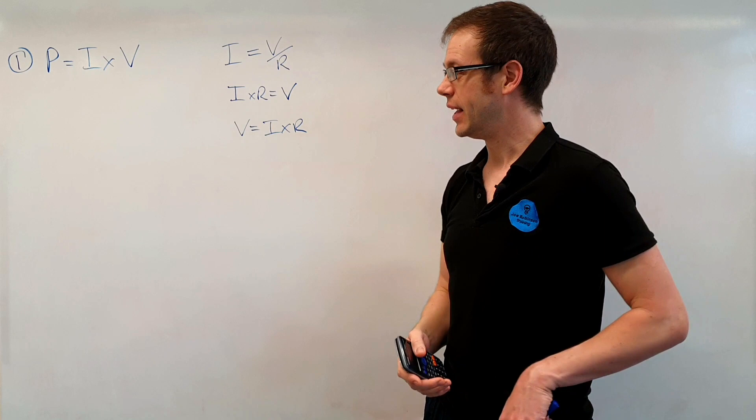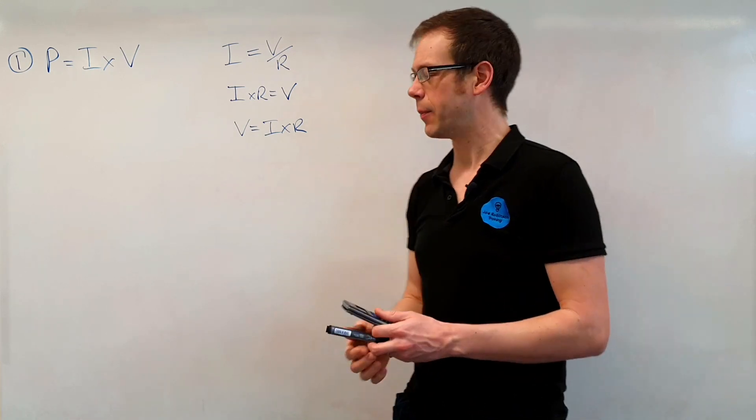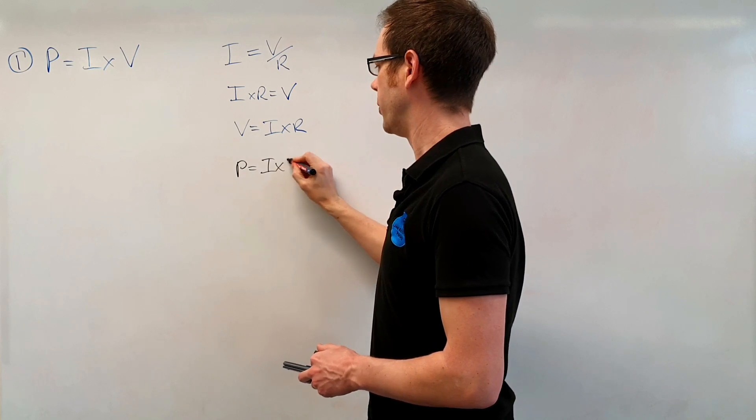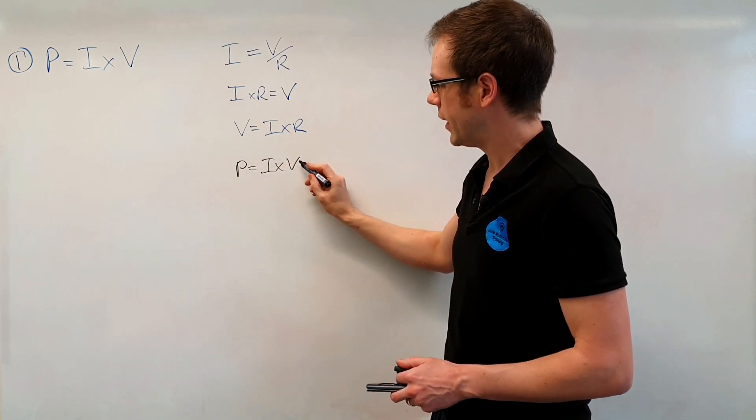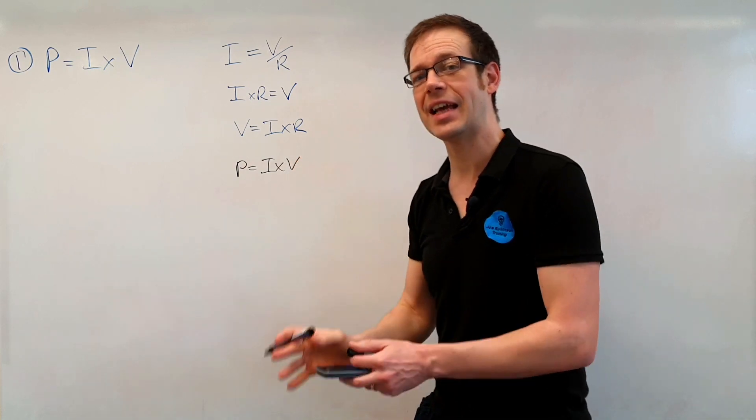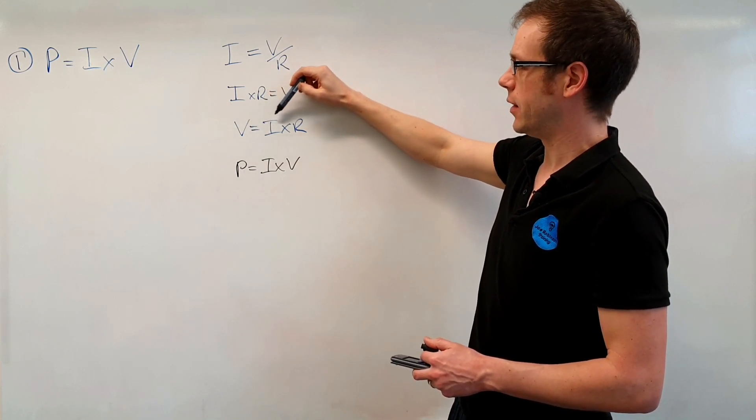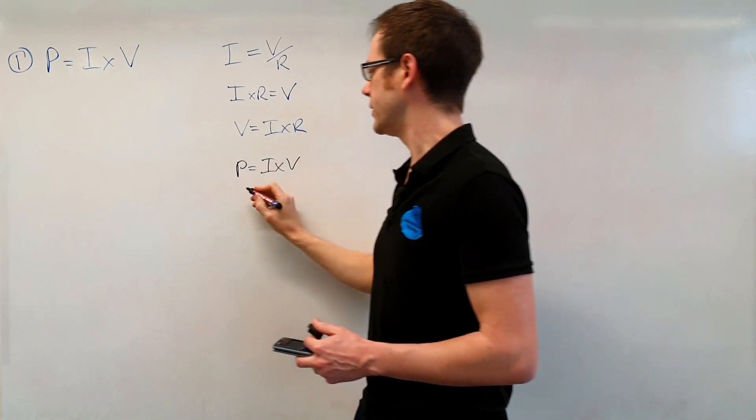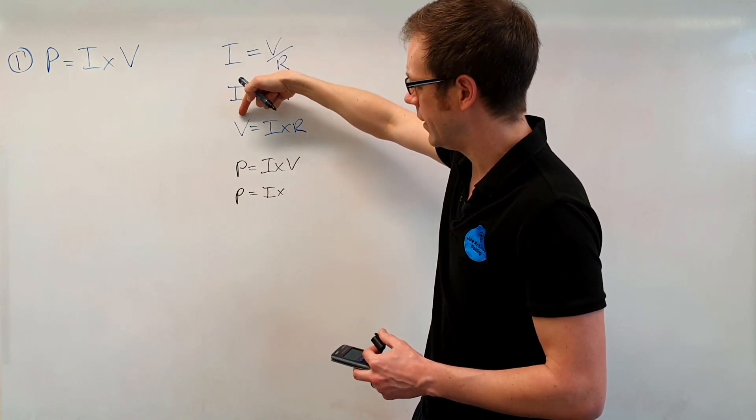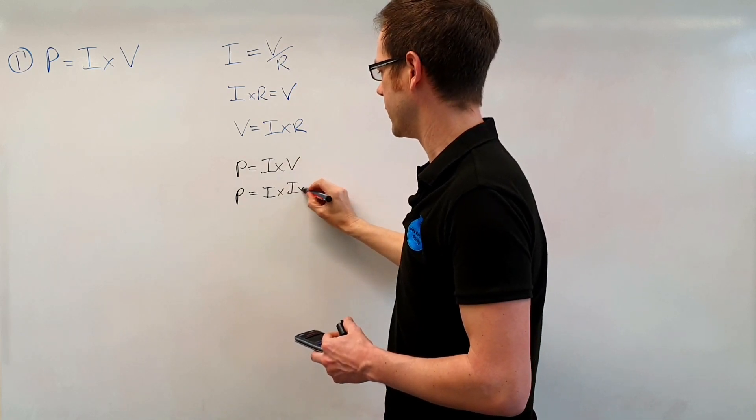Well that's interesting but how does that help us out in the context of this video? Well what we can do is we can take our basic power formula which if you'll remember was P is equal to I times by V and what we can do now is we can take this V here and we can swap it out for something that is exactly the same as it and we've just shown that V is exactly the same as I times R. So what that means is that we can write this as P equals I and then instead of timesing by V I'm going to times it by what V is exactly the same as I times R.